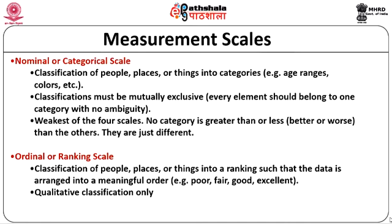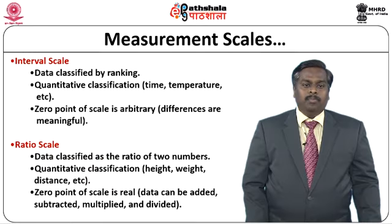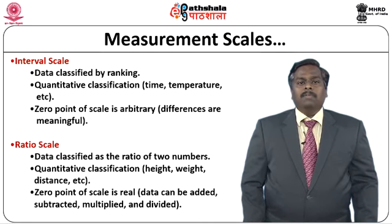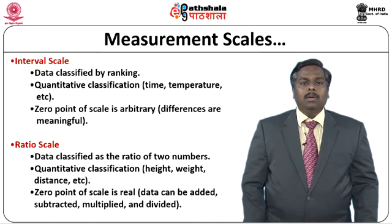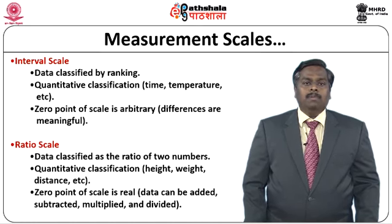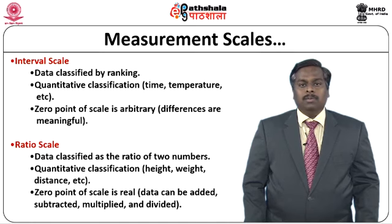Both nominal categorical scale as well as ordinal or ranking scale are used for qualitative classifications only. The next two types of measurement scales are interval scale and ratio scale. Interval scale is fundamentally used for classifying data in ranges: we can take a data, split it into ranges, and identify to which particular range the data actually belongs. This is one type of quantitative classification.